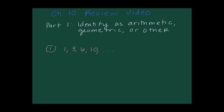Next I'll check if it's geometric. The common ratio is any term divided by the previous term. If this were geometric, our ratio would be three — one times three is three — but three times three is not six. So this is not geometric either. My only option is that this is 'other' — it's a sequence but not arithmetic or geometric.